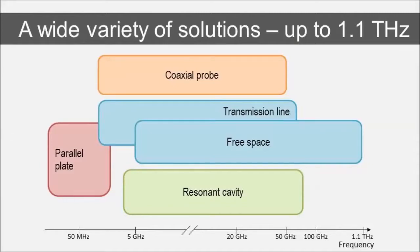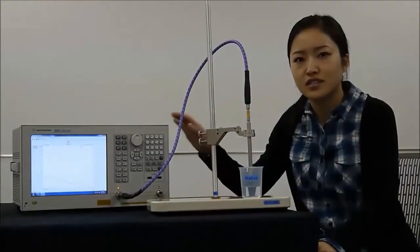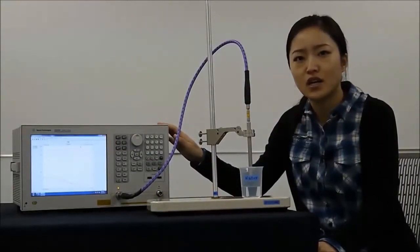Agilent provides a variety of techniques for measuring all sorts of materials and our solutions cover a very wide frequency range up to 1.1 Terahertz. In this video, I will introduce our coaxial probe test system.